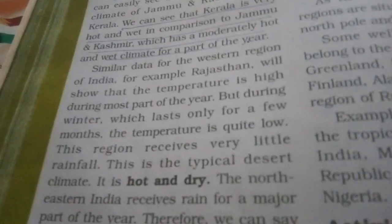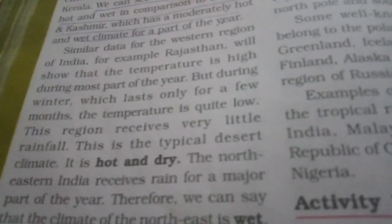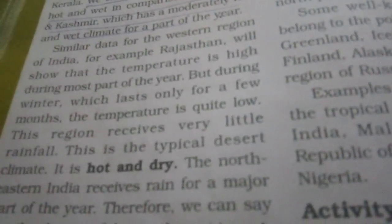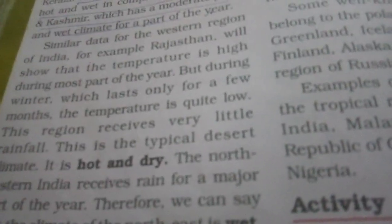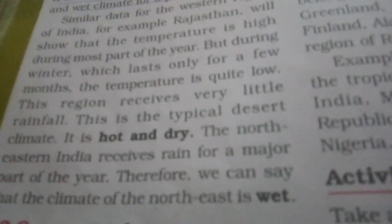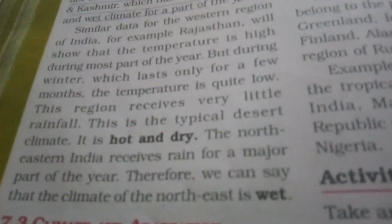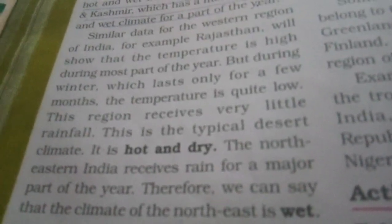Similarly, if you take data about the western region of India, for example Rajasthan, you will observe that Rajasthan has a hot and dry climate. The temperature is high during most of the year, but during winter, which lasts only a few months, the temperature is quite low. It receives very little rainfall because it is a desert area, while north and eastern India receives rain for a major part of the year, so the climate of the northeast is wet.